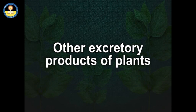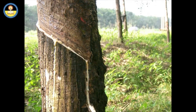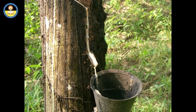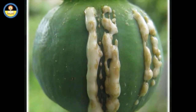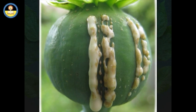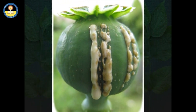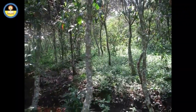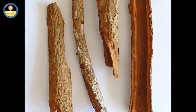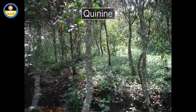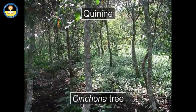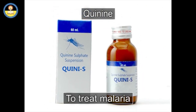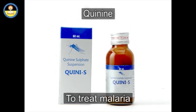Other excretory products of plants. Have you ever noticed sticky milky substances coming out of leaves, stem, or bark of a tree? These are excretory products and most of them are useful to human beings. In old trees, some waste products collect in the bark; when the bark is shed, the waste is eliminated. Quinine is obtained from the bark of the cinchona tree — it is a medicine used to treat malaria, a type of alkaloid which is often bitter in taste.